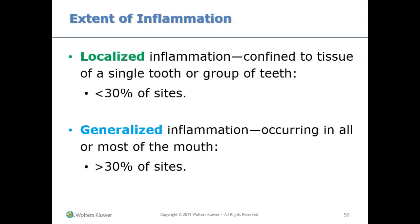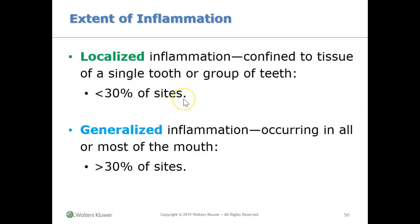When we look inside someone's mouth, we might see inflammation — basically redness and bleeding. We can say that someone has localized inflammation or generalized inflammation. To determine which, you need a number: if less than 30 percent of the areas in the mouth are inflamed, the person has localized inflammation. If more than 30 percent are inflamed, it is considered generalized inflammation.